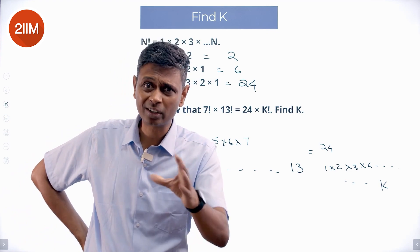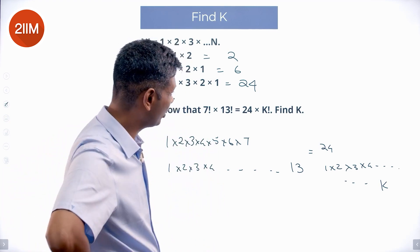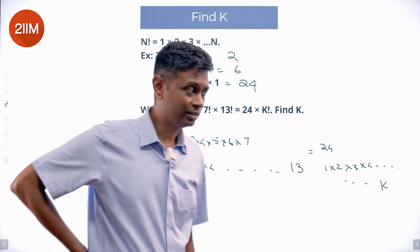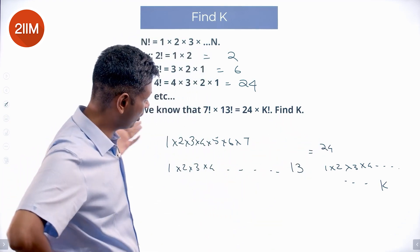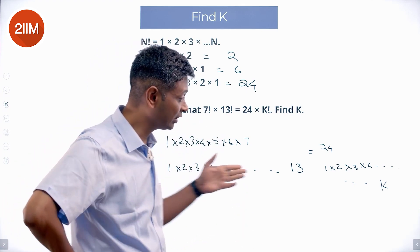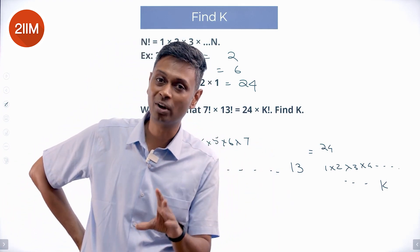Will k equal to 1 work? k equal to 1 won't work — that gives only 24 × 1. The left side has 1 × 2 × 3 all the way to 7 times 1 × 2 × 3 all the way to 13. k cannot be small.